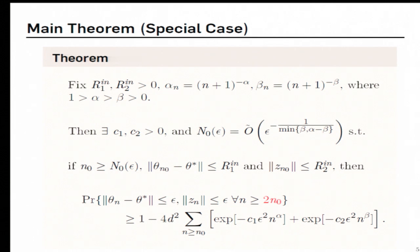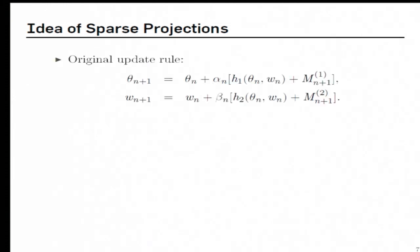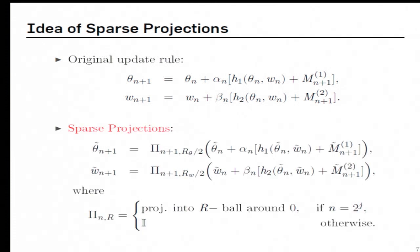Now in this result, we require that the theta N0 and the z_n0 iterate be within this ball. So how can one ensure this? Well, one way to ensure this is via this naive but effective strategy of using sparse projections. So let me take a few minutes to explain what is this. So recall this is our original update rule. In the sparse projections, we introduce this additional operator over here which is defined as follows. This operator projects onto the R ball if the N over here is some power of 2.